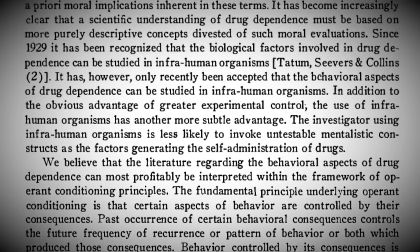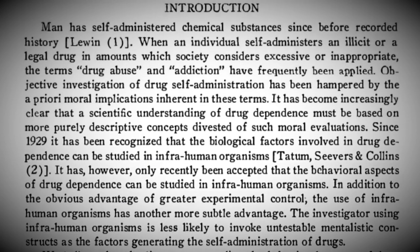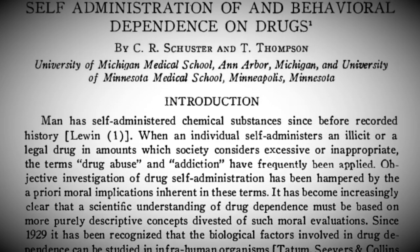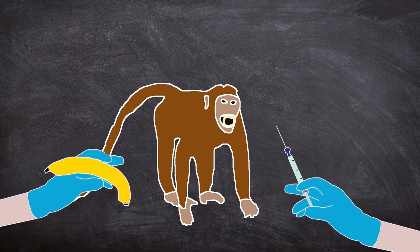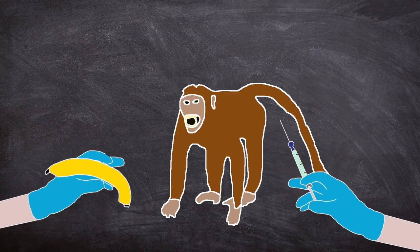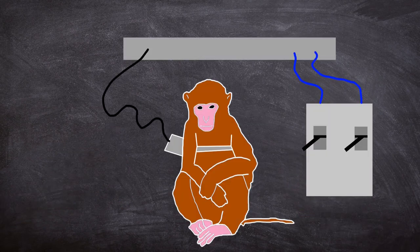Another study in 1964 by Thompson and Schuster also employed intravenously delivered morphine but in monkeys that had been restrained. This study set out to see the reinforcing capabilities of morphine versus food, but they didn't look to see if they could produce an addict from just a spontaneous lever pull.